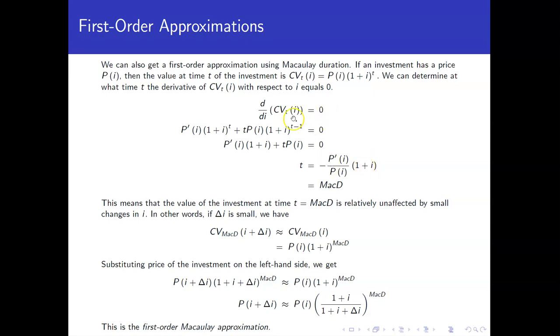So let's solve that. Take the derivative, we'll need to use a product rule. That's what this computation is doing here. We here are just dividing both sides by 1 plus i to the t minus 1. And then solve for t, you get the negative of the change in price over the price times 1 plus i. Well, if I ignore the times 1 plus i piece, we have modified duration. And remembering that if I take the modified duration and multiply by 1 plus i, I get the Macaulay duration.